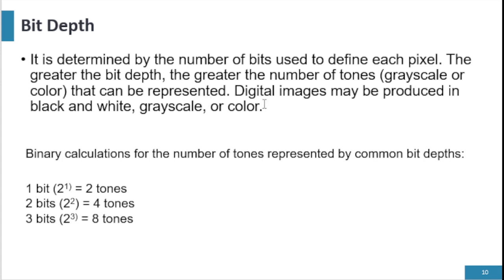Digital images can be produced in black and white, grayscale, or in color. Binary calculation for the number of tones represented by common bit depth: if you have 1 bit, you can write 2 to the power of 1 and it consists of 2 tones. If you have 2 bits you can get 4 tones, and if you have 3 bits you can get 8 tones of an image.